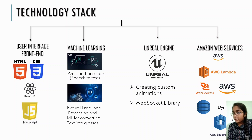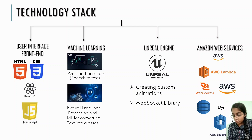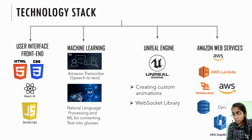In the third phase, which is the Unreal Engine part, Unreal Engine is used to create custom animations that can perform sign language gestures. The WebSocket library in Unreal Engine is an open source C++ library that provides a simple and efficient interface for creating WebSocket connections.